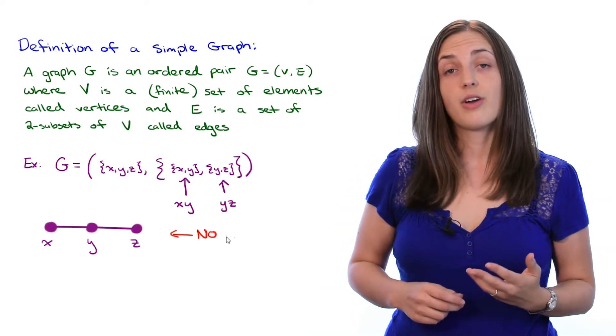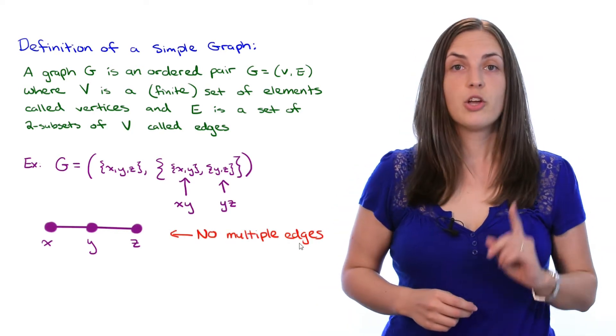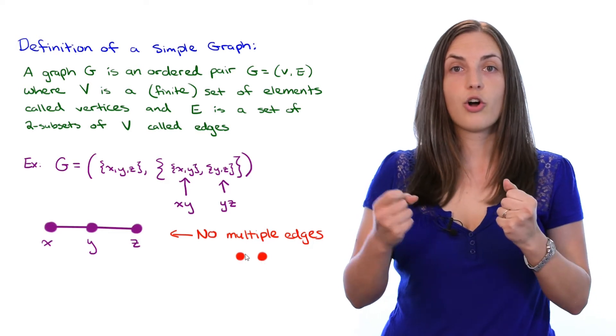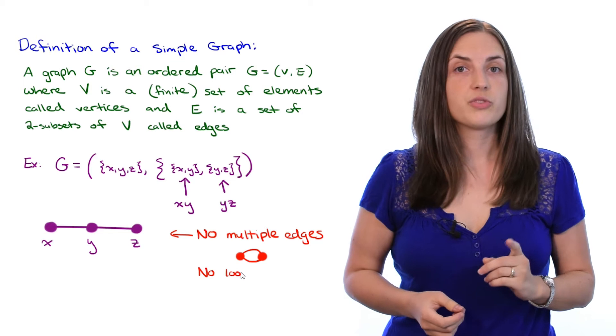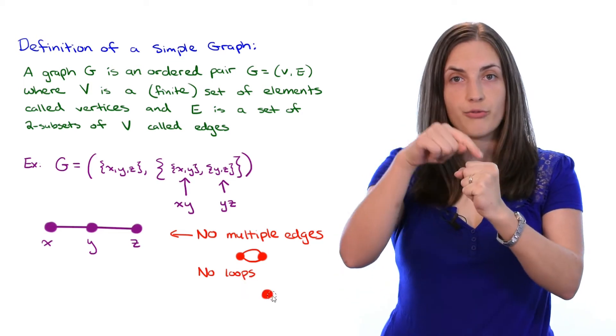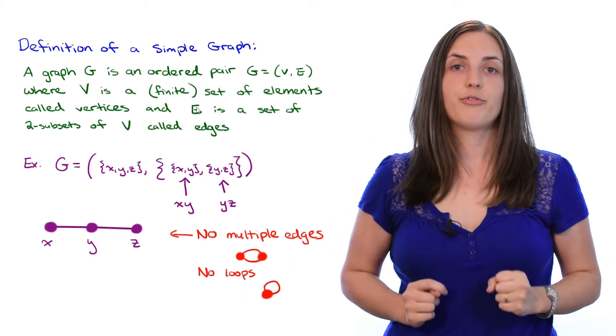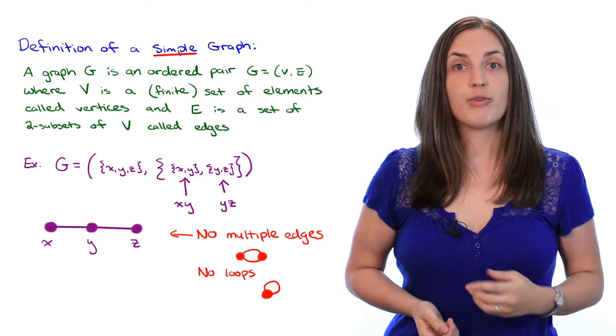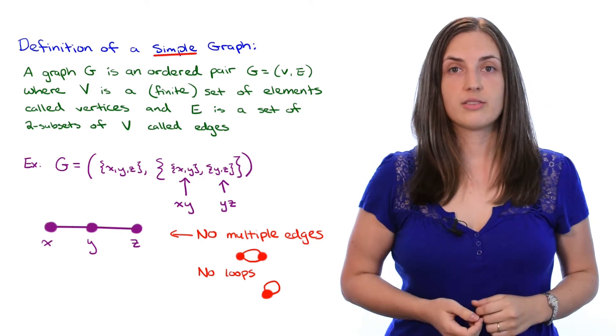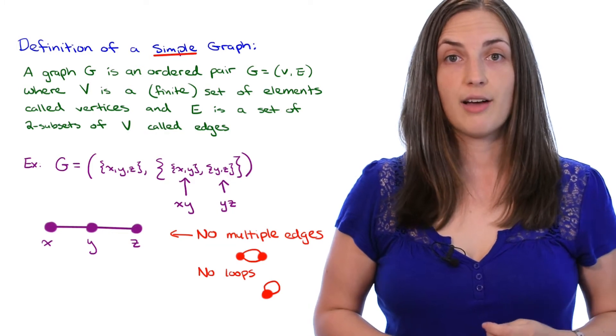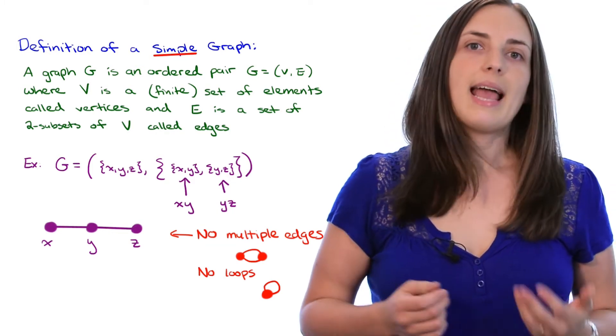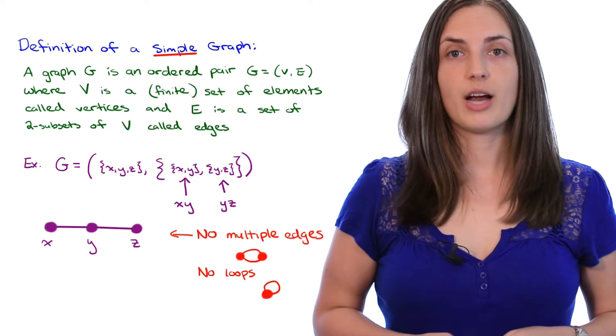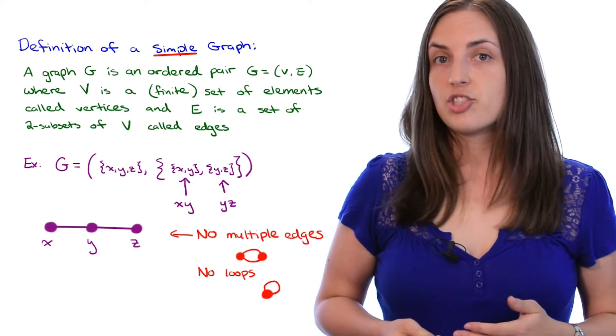Notice that this graph has no multiple edges, which are edges that all go between the same two vertices, and it has no loops, which are edges that go from a vertex back to itself. That's what's known as a simple graph, any graph which does not have either of those things. This definition of a graph, which is what we've been using, is often used in textbooks and in research papers whenever simple graphs are being considered, and in this channel we have been just considering simple graphs.